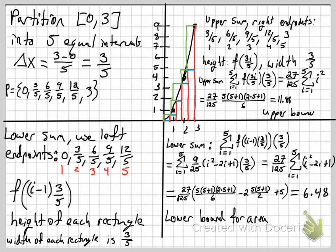The actual area fits between 11.88 and 6.48. The idea here with integration is to use even more rectangles — the more rectangles we use, the better the approximation. The upper and lower sums converge on the same number, which is what we define as the area under the curve, and that's the definite integral. Now let's do it generically with n instead of 5.